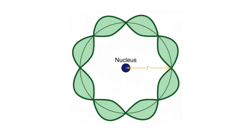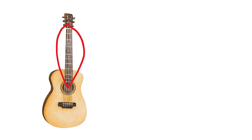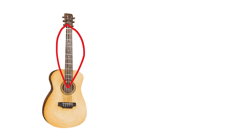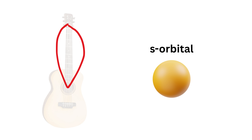Orbitals have different shapes because electrons behave like waves, not tiny balls. These waves must fit around the nucleus in specific patterns where their energy is stable, just like a vibrating drum or guitar string can only produce certain shapes of vibration. You can think of this like musical notes on a guitar string.